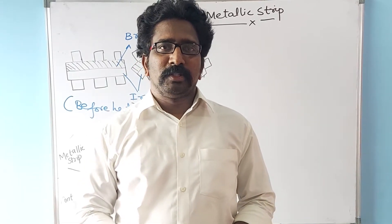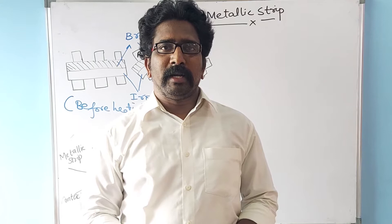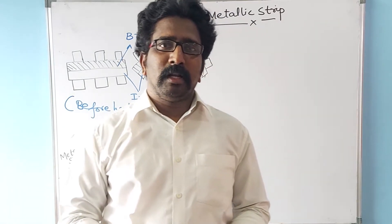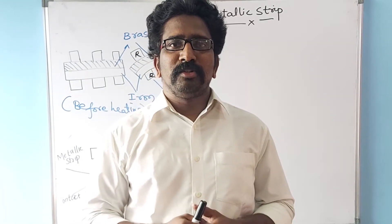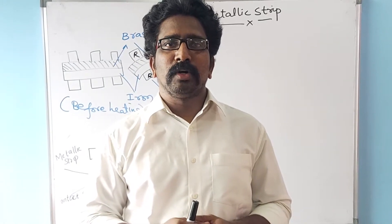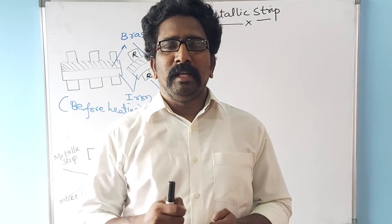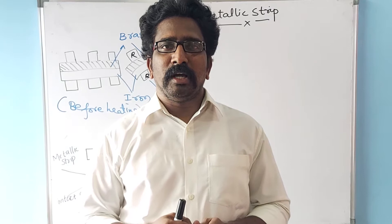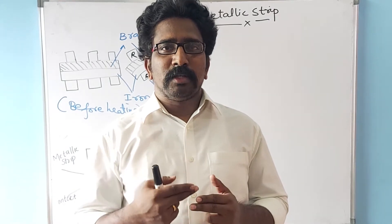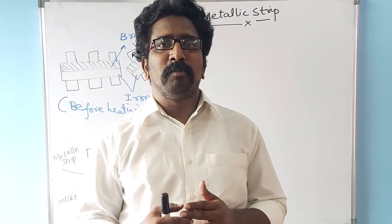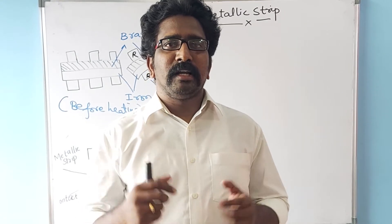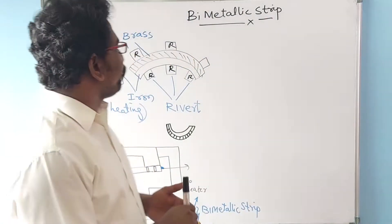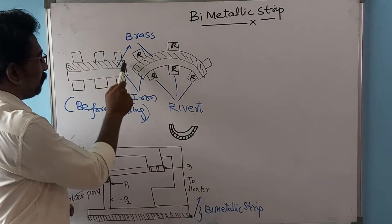Hello everyone, today we will be studying about a concept called bimetallic strip. A bimetallic strip is a metal made by using two kinds of material called brass and iron. Mostly the bimetallic strips have been made by using brass and iron. When these two metals, brass and iron, are joined together we call this entire setup a bimetallic strip.